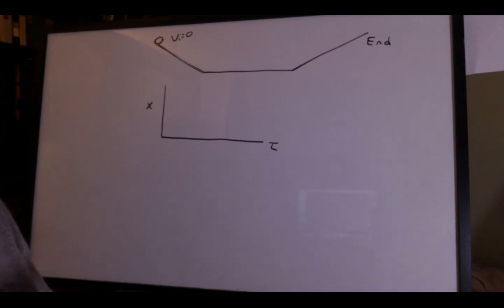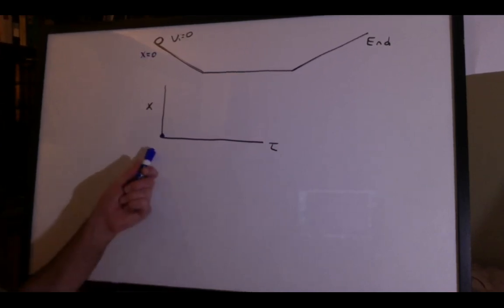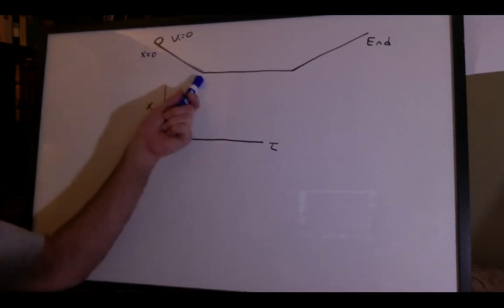Without plotting any data, would you be able to sketch a graph of position versus time? Now pause the video before I show you the answers. Okay, let's assume that the left side is position zero. I'm going to start down here. And now the ball is going to come downhill. It's going to speed up.